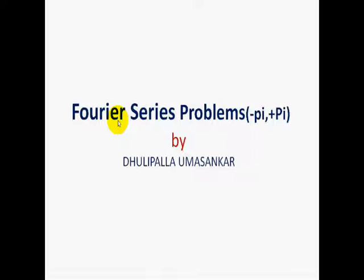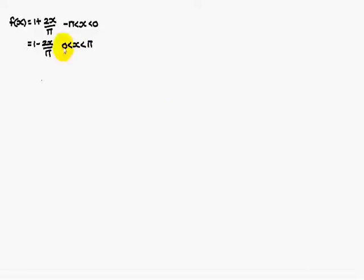Today we are going to discuss Fourier series problems in the interval minus pi to plus pi. The first problem is f of x equal to 1 plus 2x by pi for minus pi less than x less than 0, and the function is 1 minus 2x by pi for 0 less than x less than pi.